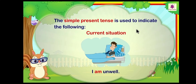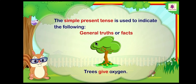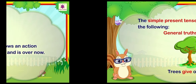Current situation: whenever we are talking about the current situation, the action that is happening right now, that also falls in the category of simple present tense — 'I am well.' General truth: whenever we are talking about a general truth, it always falls in the category of simple present tense — 'Trees give us oxygen.'